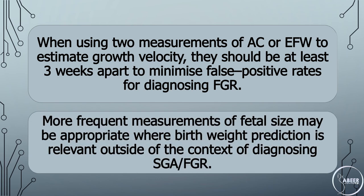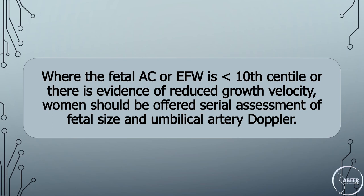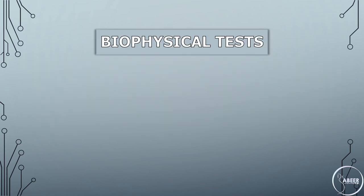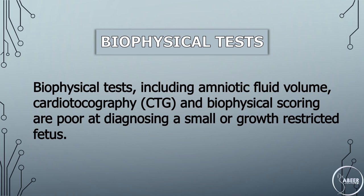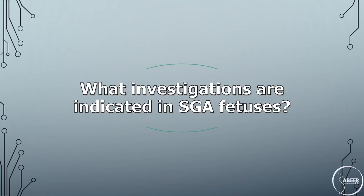When using two measurements of abdominal circumference or estimated fetal weight to estimate growth velocity, they should be at least 3 weeks apart to minimize false positive rates for diagnosing fetal growth restriction. Where the fetal abdominal circumference or estimated fetal weight is less than the 10th centile or there is evidence of reduced growth velocity, women should be offered serial assessment of fetal size and umbilical artery Doppler. Biophysical tests including amniotic fluid volume, cardiotocography, and biophysical scoring are poor at diagnosing a small or growth-restricted fetus.